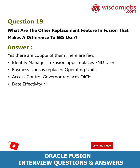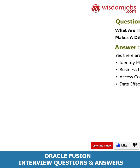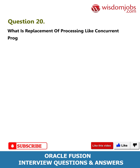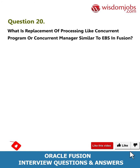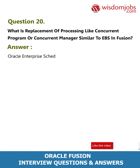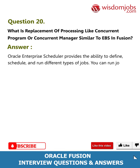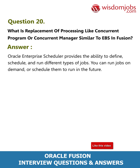Question 20: What is the replacement for processing like concurrent programs or concurrent manager in Fusion, similar to EBS? Oracle Enterprise Scheduler provides the ability to define, schedule, and run different types of jobs. You can run jobs on demand or schedule them to run in the future.